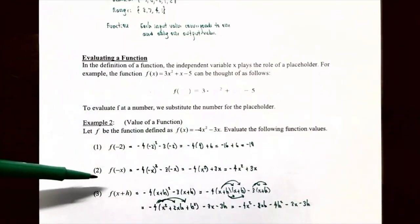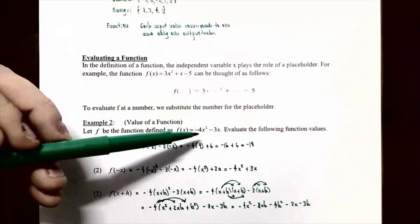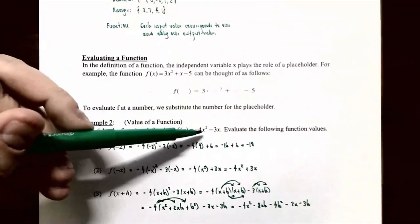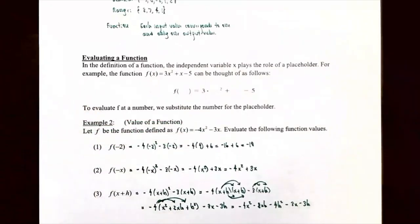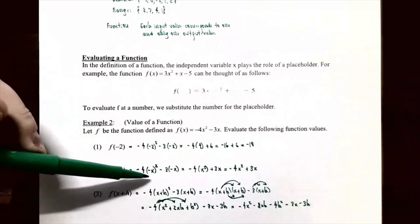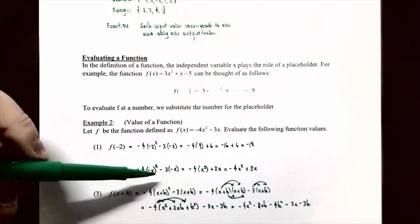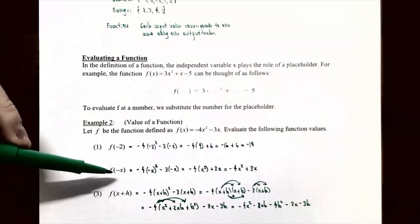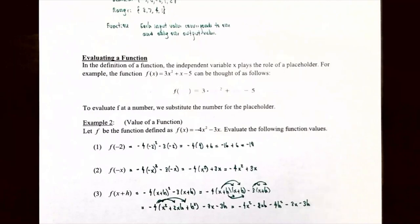Number 2: find f(−x). Replace all x values with (−x) in parentheses: −4(−x)² − 3(−x). Simplifying: −4(x²) + 3x = −4x² + 3x. So the output when you input −x is −4x² + 3x.